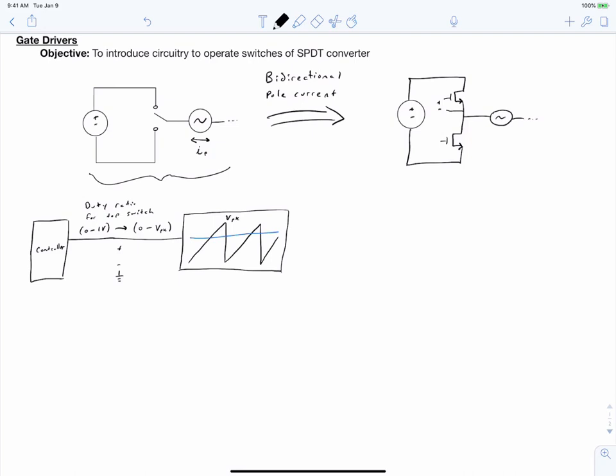The sawtooth waveform has a magnitude of V peak. This is the maximum value that our duty ratio can take on. The frequency of our carrier is actually our switching frequency for our converter.